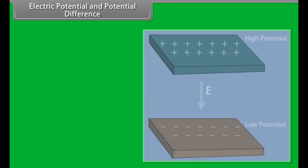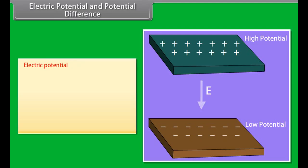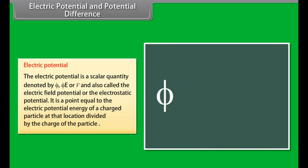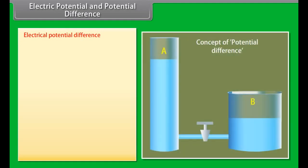Electric potential and potential difference: Electric potential is a scalar quantity denoted by E or V. It is equal to the electric potential energy of a charged particle at the location divided by the charge of the particle. Electrical potential difference determines the direction of the flow of charge.